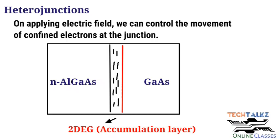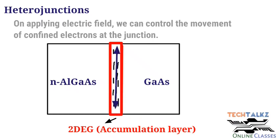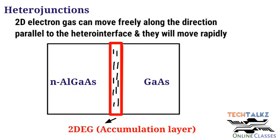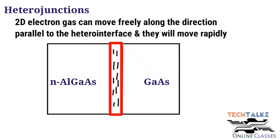These electrons will move very fast because of the low effective mass and the absence of impurities in gallium arsenide. This accumulation layer is also called two-dimensional electron gas. The electrons are trapped here but are free to move in the direction parallel to the interface. So in the accumulation layer there will be free electrons and no impurities, because the accumulation layer is in gallium arsenide, which is generally not doped — it is intrinsic gallium arsenide. So during the movement of electrons, there will not be any scattering due to impurities.